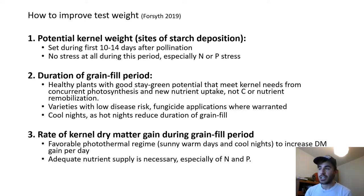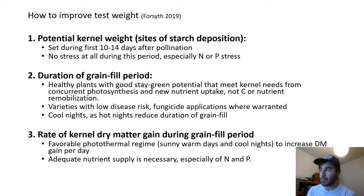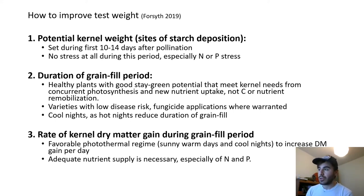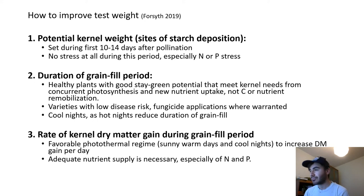The second category of management strategies are those which increase the duration of the grain fill period. We always want healthy plants with good stay-green potential that meet kernel needs from concurrent photosynthesis and nutrient uptake. We don't want kernels relying on remobilization of nutrients or carbon, especially during early and mid grain fill. During late grain fill, when photosynthesis is very low and temperatures are cool, that's when we want kernels to depend on remobilization — but not before. We want varieties with low disease risk and fungicide applications where warranted to keep that canopy green, clean, and photosynthesizing. We also want cool nights, as hot nights will reduce the duration of the grain fill period.